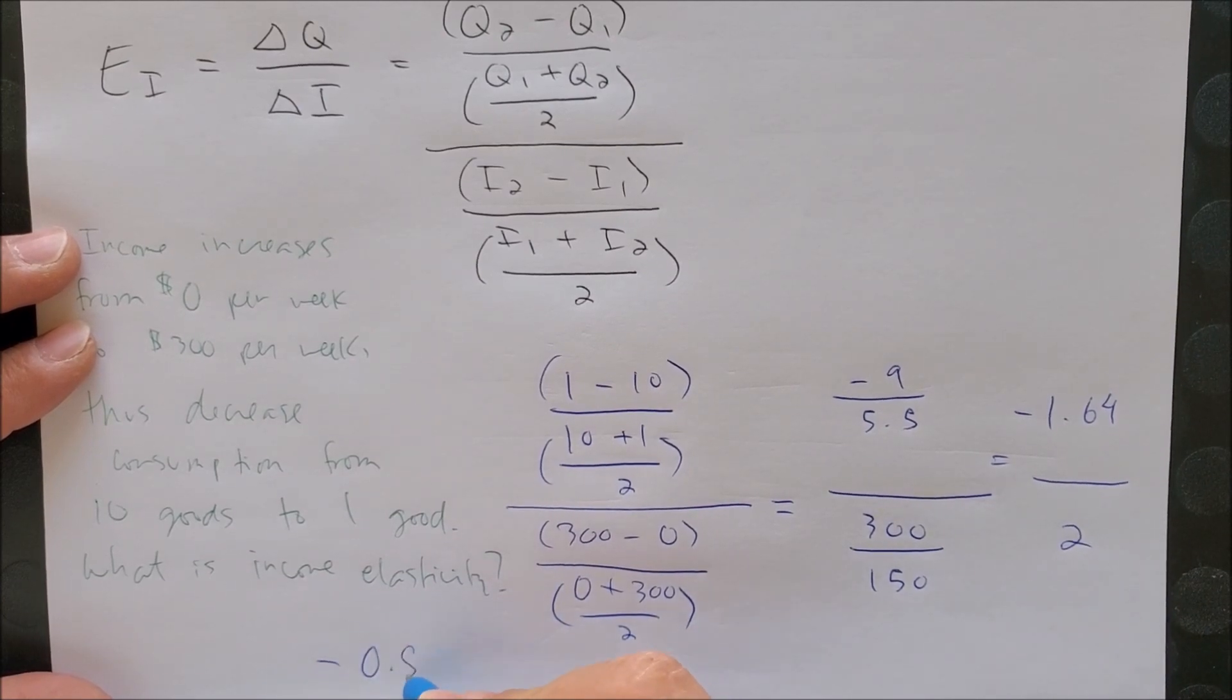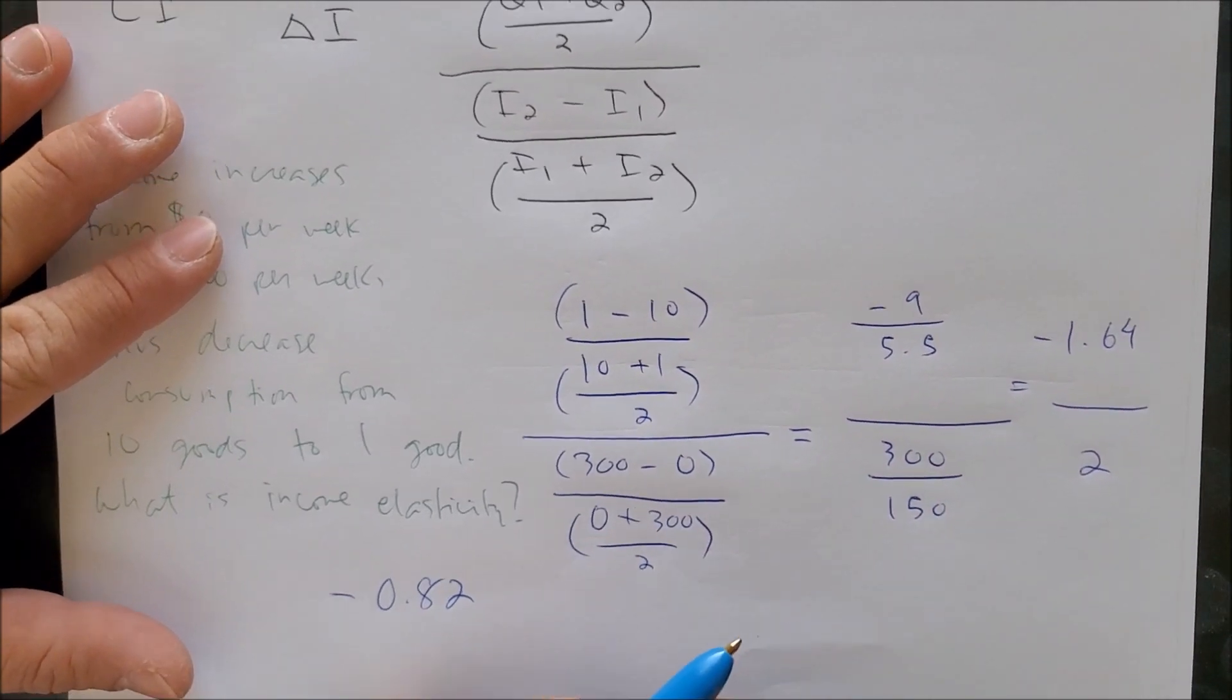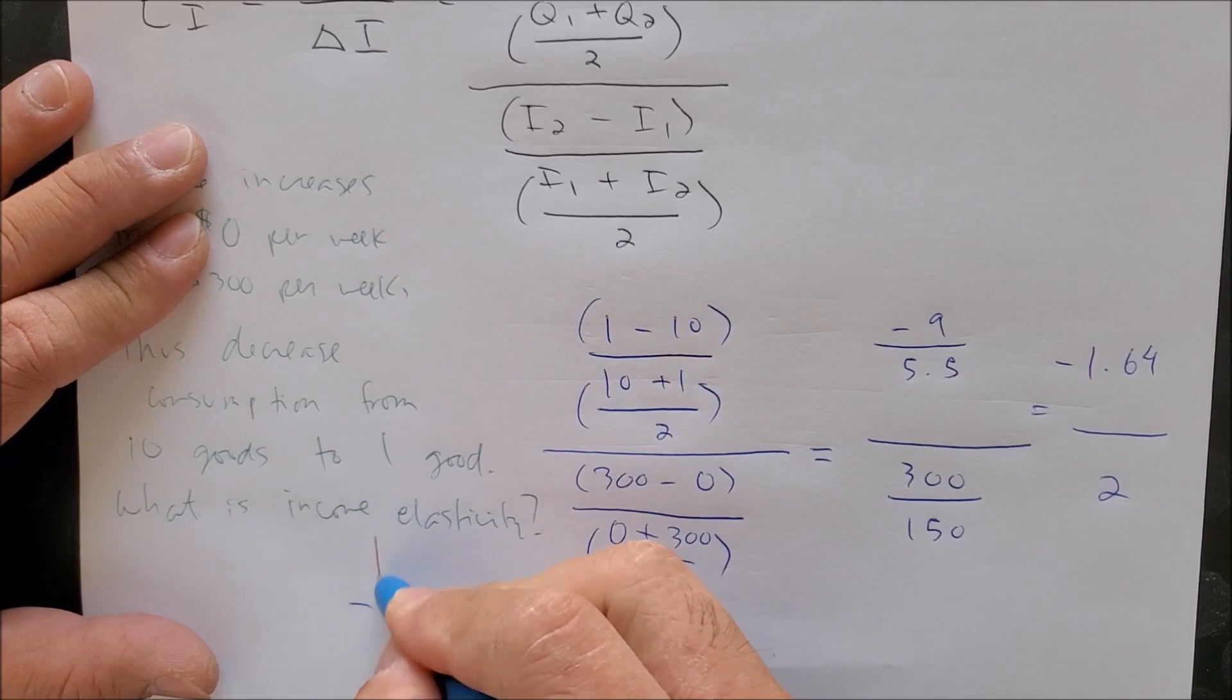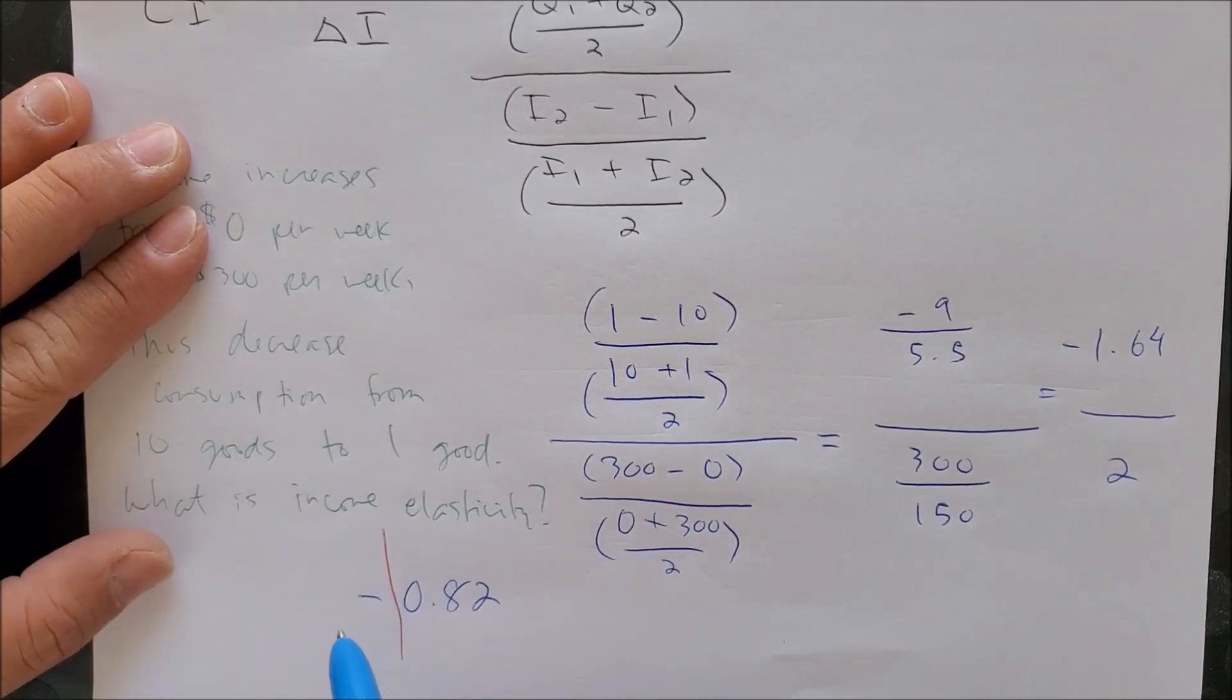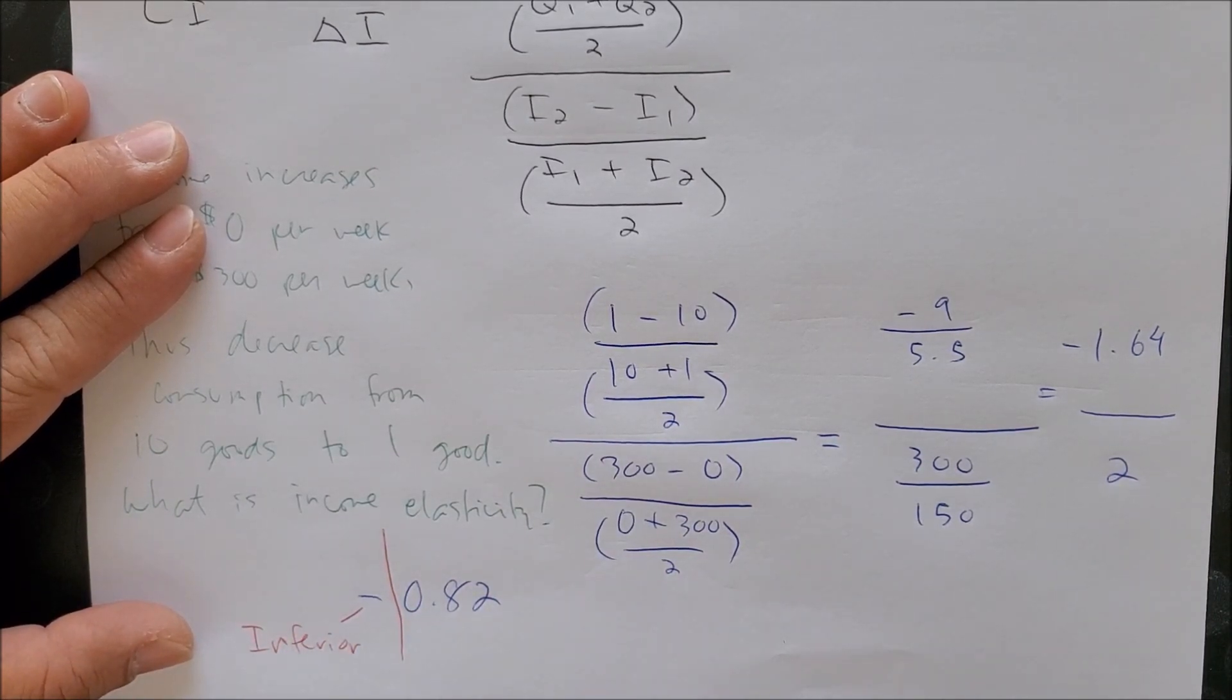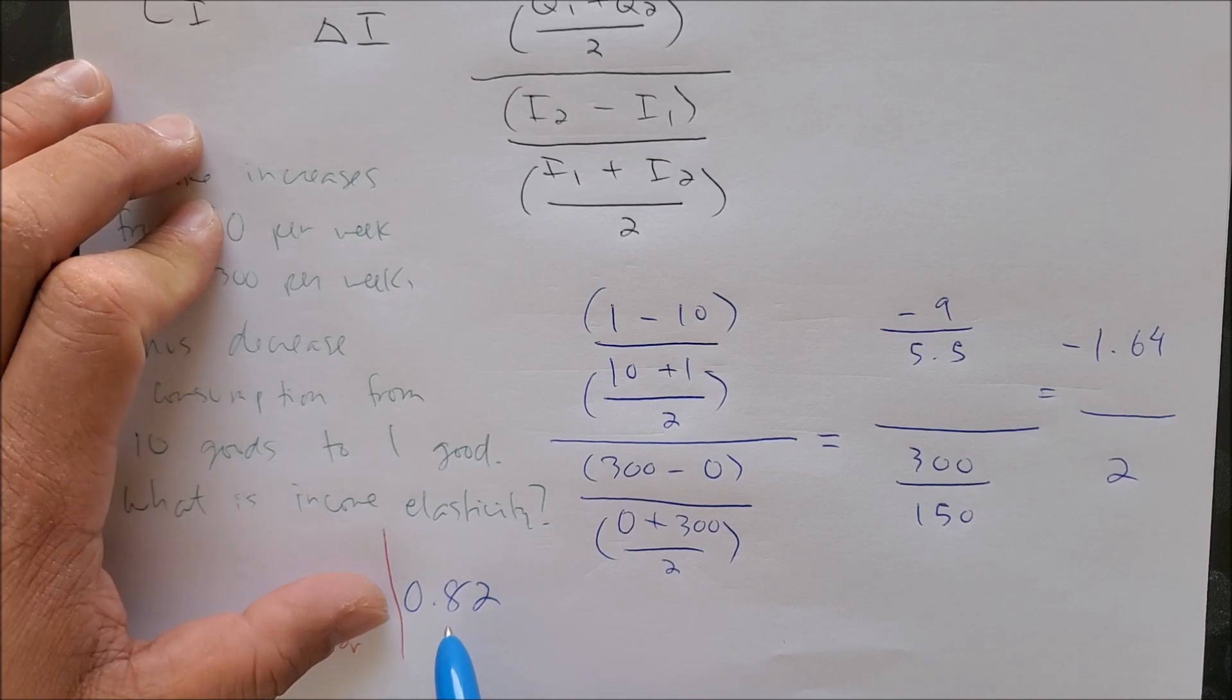Now because this is income elasticity, we know that we have a two-part answer where we can see that the negative sign represents the type of good we are working with. With respect to your income, it is an inferior good, and the number that we get is 0.82 - it's less than one, hence it is inelastic.